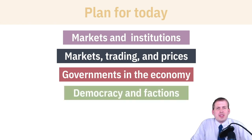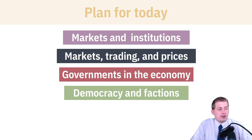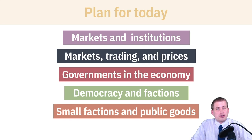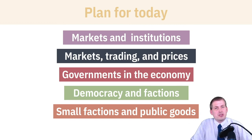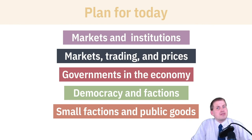Then we'll talk about democracy and small groups in democracy, and how this might distort what happens with markets and government intervention in markets. Small groups behave differently than large groups, and based on your reading of the Federalist Papers, we're going to talk about what James Madison said hundreds of years ago about the dynamics of small groups and how democracy should in theory eliminate those risks — but doesn't quite.